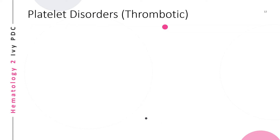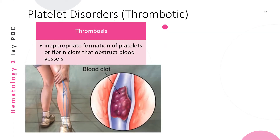The second platelet disorder category is thrombotic platelet disorder. Thrombosis is a disorder resulting from abnormalities in blood flow that causes the inappropriate formation of platelet or fibrin clots that obstruct blood vessels — this is called a thrombus.